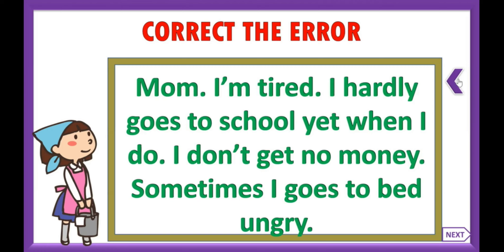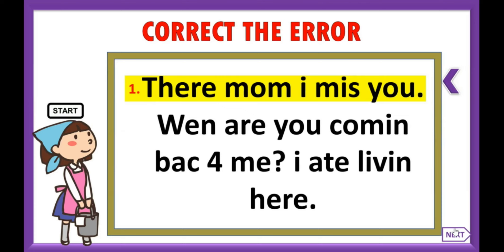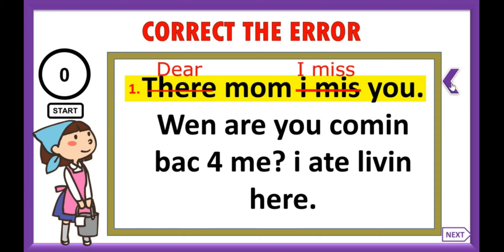Now let us look at each sentence. Sentence number one: 'Dear mom, I miss you.' You need to identify and correct all the errors. The word 'dear' — D-E-A-R — means 'my beloved mom.' The letter I is capitalized because whenever you use the letter I by itself, it should be capitalized. The word 'miss' was also spelled incorrectly.